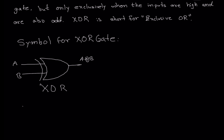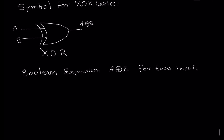The Boolean expression for the XOR gate — for two inputs — is A plus B surrounded by a circle, meaning exclusively OR. That is our Boolean expression for two inputs. If we have three inputs, that will be A exclusively-OR B, exclusively-OR C. That is the Boolean expression for three inputs.